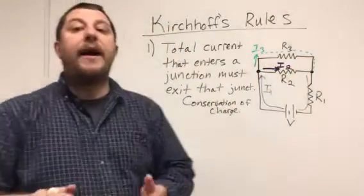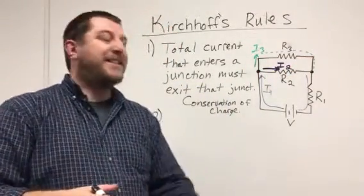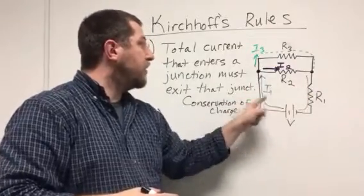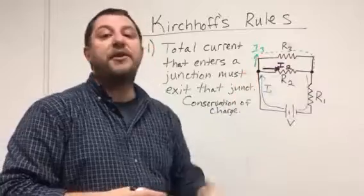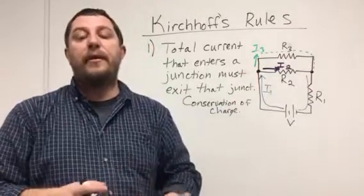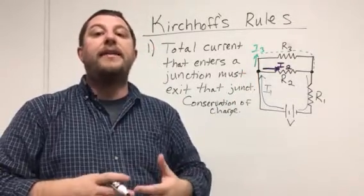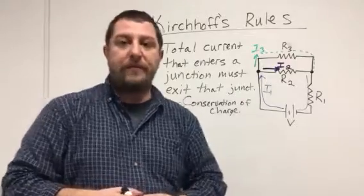Now I have three branches of current: I1 flowing through this branch, I2 flowing through this branch, and I3 through this branch. The general rule is however many branches you have, that's how many loops you have and that's how many currents you have.